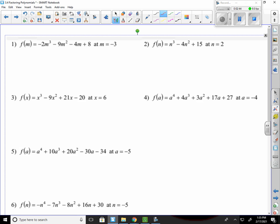All I would have had to do was plug in my negative 3. This would be negative 2 times negative 3 to the 3rd. That's negative 27. Minus 9 times negative 3 squared. That's 9. Minus 4 times negative 3 plus 8. Negative 2 times negative 27. That's going to give me a positive 54. Minus 81 plus 12 plus 8. 54 minus 81 is going to be negative 27. Sounds right. Plus 20. It gives me negative 7. So this would not be a factor.